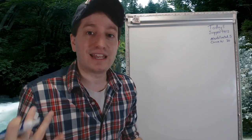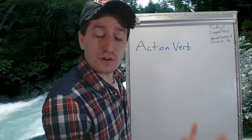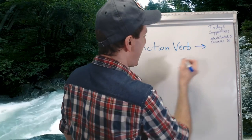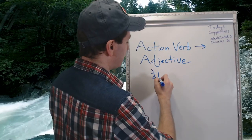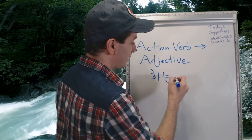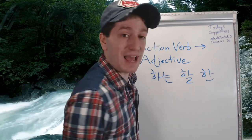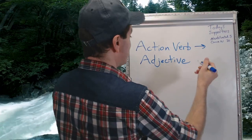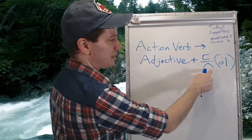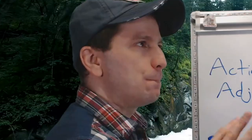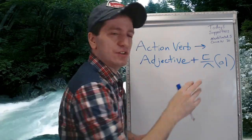Everything we're going to be learning today is related to the word 듯. Here is the first way we're going to learn how to use it. You take an action verb stem and you change it into an adjective. You can take an action verb — you could get present tense, future tense, past tense, for example — then you attach 듯, and optionally 이. So it could either just be 듯 or 듯이. Most of the time you'll hear 듯, but in writing, you might see 듯이 used a lot.